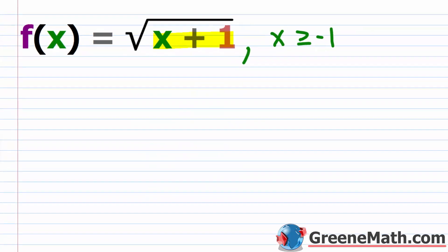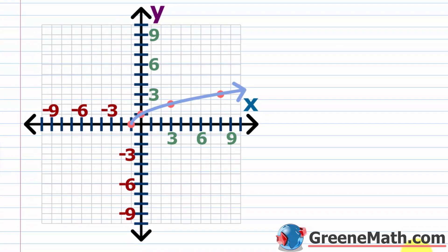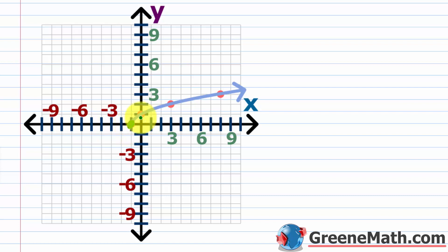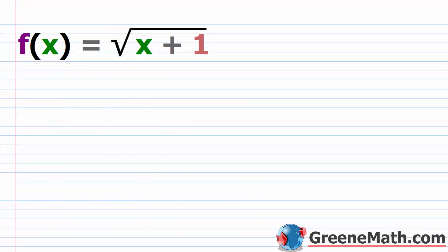If we look at this graphically, we can clearly see that this is a one-to-one function — it passes the horizontal line test with flying colors. We can also see that our domain restriction is here: you can see the point negative one comma zero, which is the leftmost point in this graph. For any x value to the left of that, it doesn't exist on this graph. Now let's think about what happens if we found the inverse without considering the domain restriction.